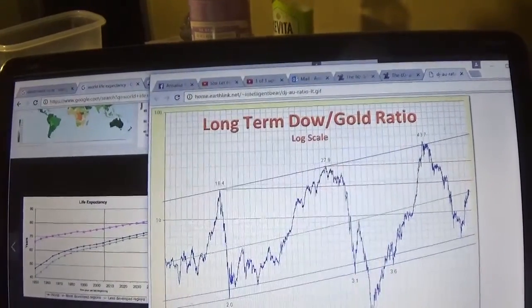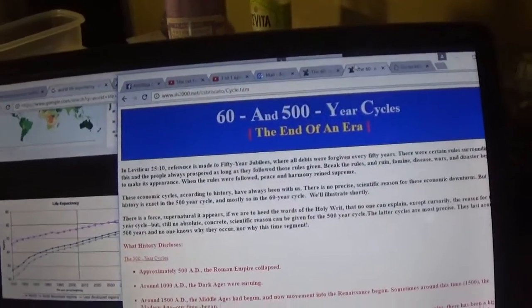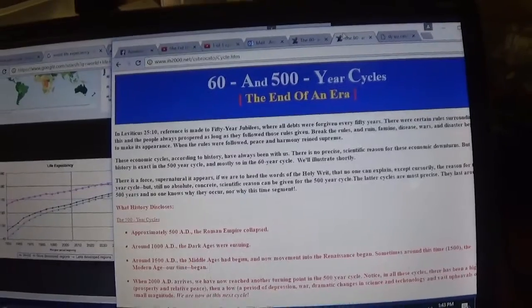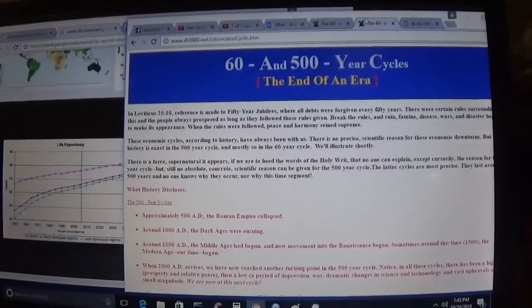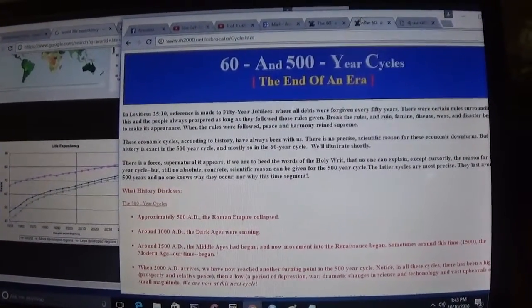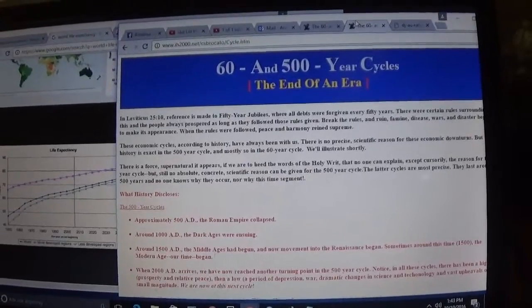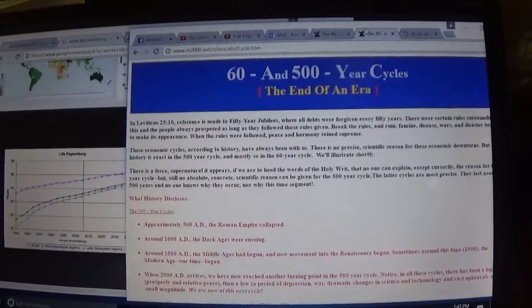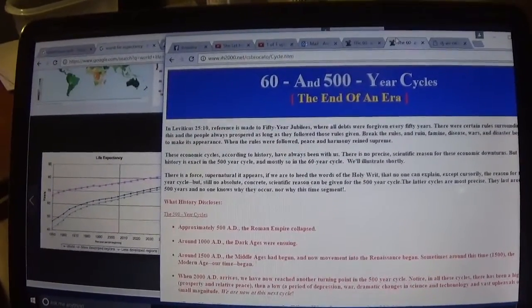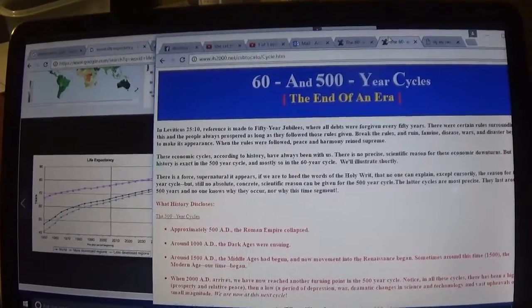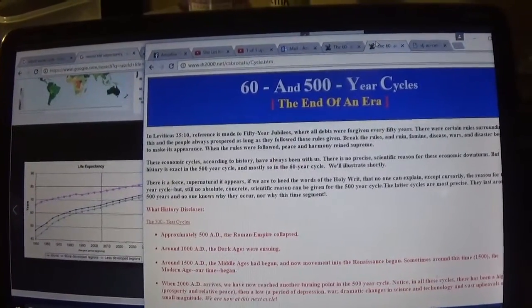But there's an even more exciting cycle. Read about this: the 500-year east-west cycle. The idea is that prosperity every 500 years moves from the east of the globe to the west and back and forth. So 1,000 years ago, we had the dark ages. 1,500 years ago, we had the middle ages.